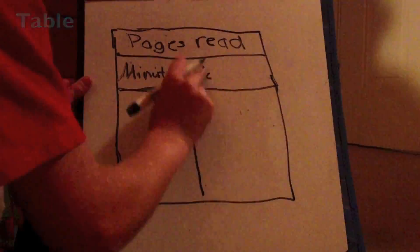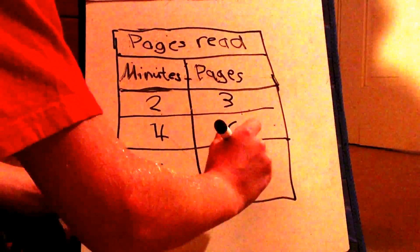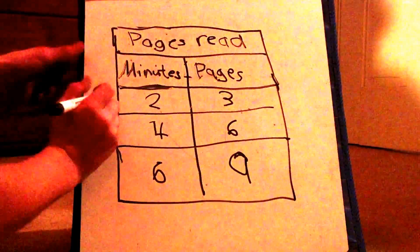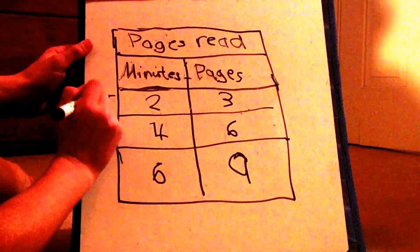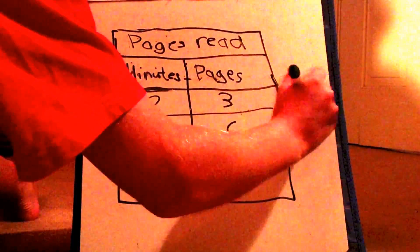Here I'm going to show you how to plot points on a line graph if you had data from a table. This table shows how many pages you could read in a certain amount of minutes, and here the unit rate is 2 minutes for every 3 pages.